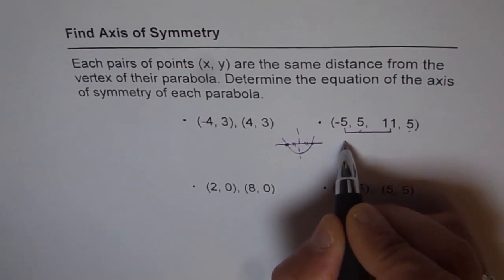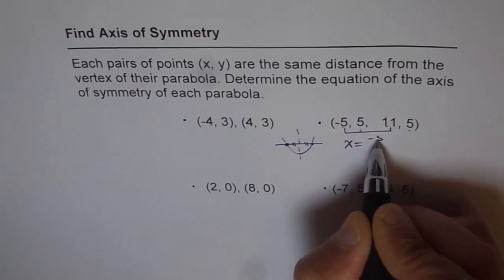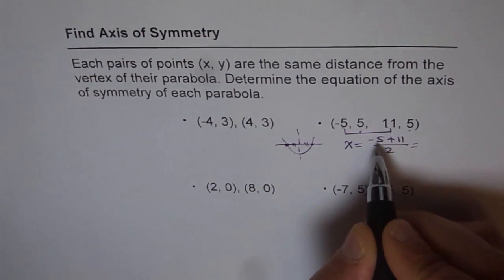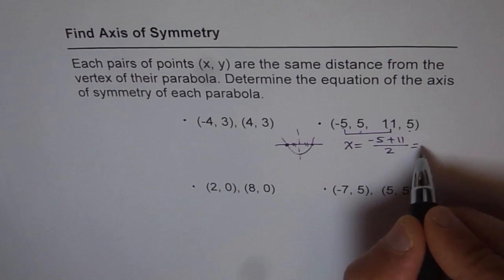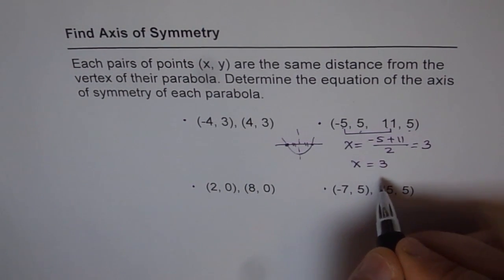So we can find axis of symmetry as x equals to, add these, divide by 2. Minus 5 plus 11, divide by 2. That is, 11 minus 5 is 6. 6 divided by 2 is 3. So x equals to 3 is axis of symmetry.